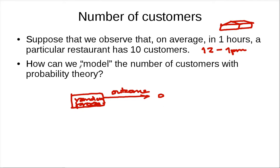When we say we want to model something with probability theory, we would like to introduce some random process whose outcomes are somewhat related to this real experiment, this real random phenomena.